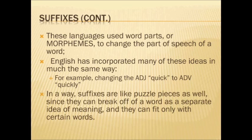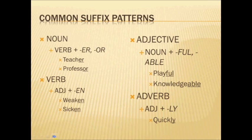For example, we took the adjective 'quick' and added the ending -ly to form the adverb 'quickly.' In a way, suffixes are like puzzle pieces, since they can break off of a word as a separate idea of meaning and can fit only with certain words. Here are some common suffix patterns: to create a noun, take a verb and add -er or -or, as in 'teacher' or 'professor.' To form a verb, take an adjective and add -en, such as 'weaken' or 'sicken.' With adjectives, take nouns and add -ful or -able, to get 'playful' or 'knowledgeable.' And for adverbs, take an adjective and add -ly, as in 'quickly' — one of the most consistent patterns.